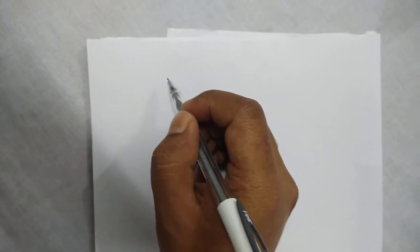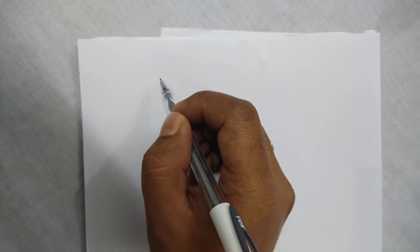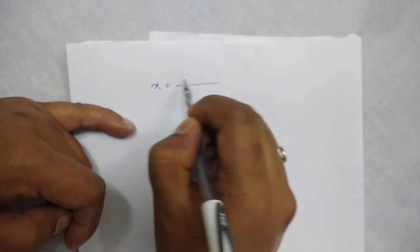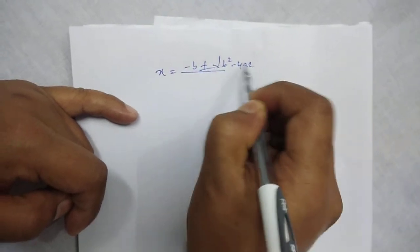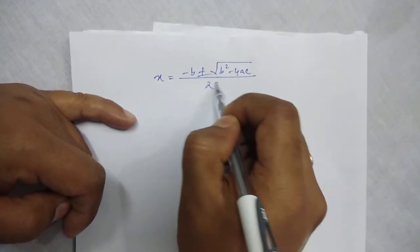Hello my dear students, in my last class I taught you about the use of quadratic formula while solving quadratic equations. The formula was x equals minus b plus minus root over b square minus 4ac by 2a.